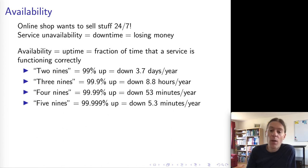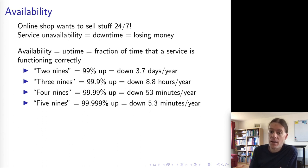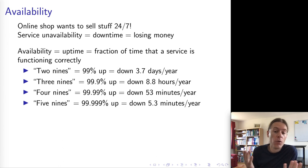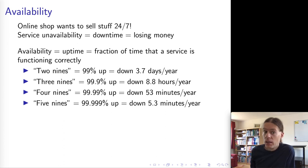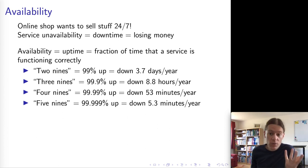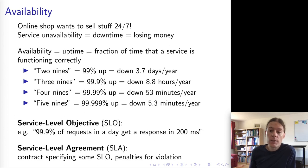You can increase this further to as many nines as you like. The telephone network, for example, is apparently designed for five nines. This is the old-fashioned fixed-line telephone network — not mobile networks, certainly not the internet, which don't have this sort of availability. The telephone network is designed in a very conservative way in order to achieve this very high reliability, but it is possible.